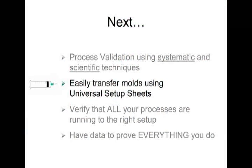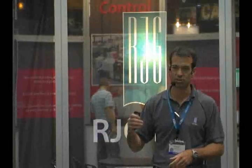We moved through that material pretty quickly, but hopefully you understand how a scientific, data-based approach using the four plastics variables can be utilized in the validation process. Now, another common problem for medical device molders is that once they've validated a process, they're locked into a machine. The reason that is typically the case is that the validation was done on machine-dependent variables as opposed to plastic-dependent variables. We're going to look at a couple of examples of those areas where process transfer is typically hung up.